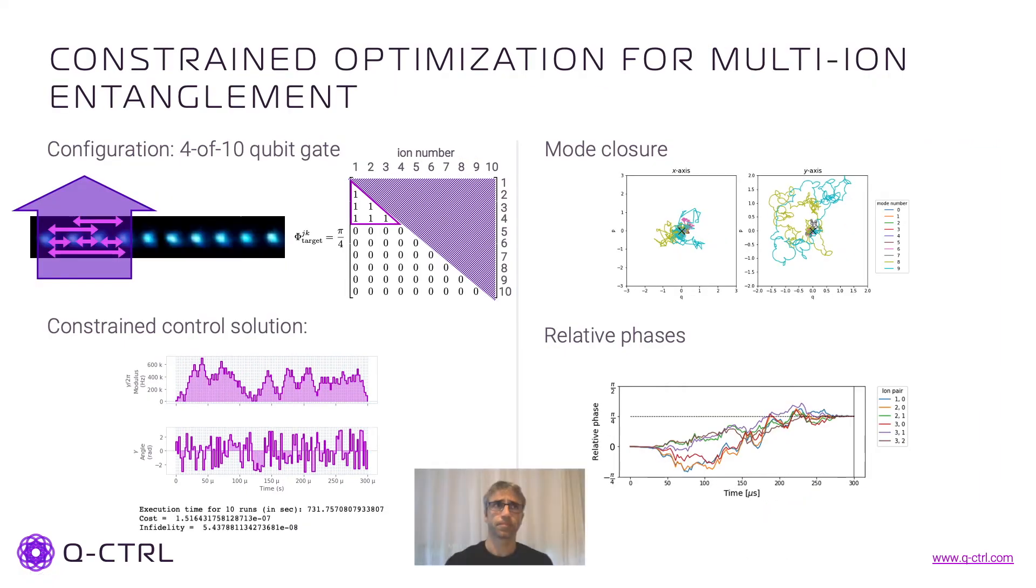So another example here to show the configurability is a multi-ion gate. So here I'm using the same laser shining on the first four ions. The arrows here are indicating which pairs are connected through the phases being different from zero, which is this upper triangle here. So I have ions from one to four all being entangled.